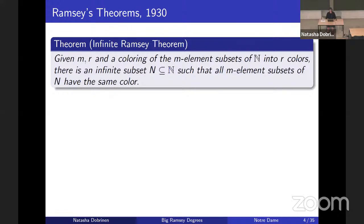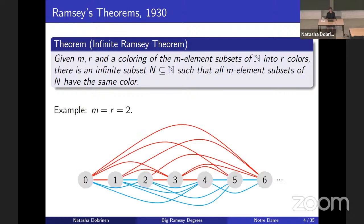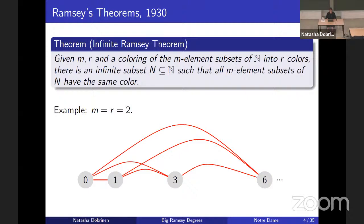The infinite Ramsey theorem states that given M and R, and a coloring of the M-element subsets into R colors, there is an infinite subset N such that all of the M-element subsets of N have the same color. For the special case of M and R equaling two, we can think of this as coloring the edges of a complete graph on infinitely many vertices, and then Ramsey's theorem guarantees that there will be an infinite subgraph which has all of the edges of the same color. The point is to show that, although Ramsey's theorems are often stated just as set theorems, they also can be viewed as structure theorems, in this case for complete graphs.